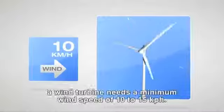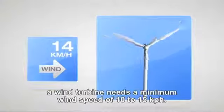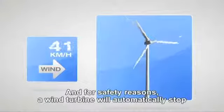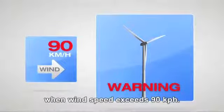In order to function, a wind turbine needs a minimum wind speed of 10 to 15 kilometers per hour. And for safety reasons, a wind turbine will automatically stop when the wind speed exceeds 90 kilometers per hour.